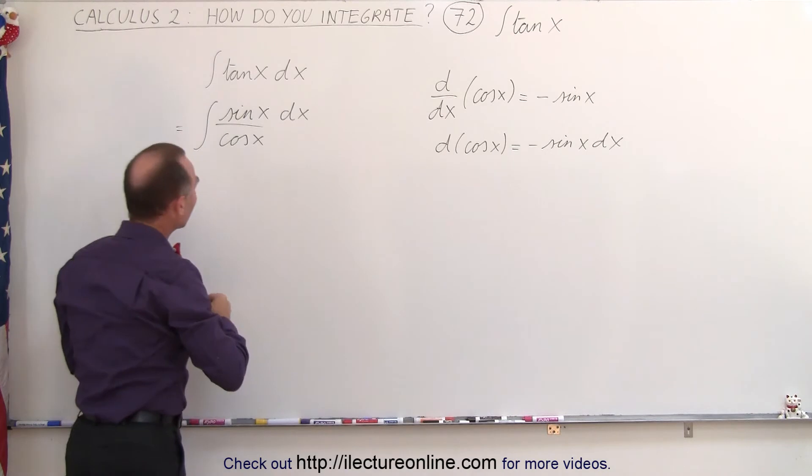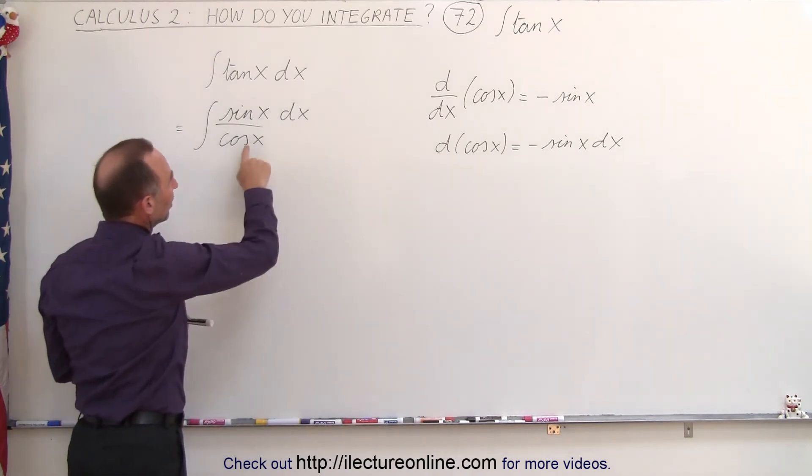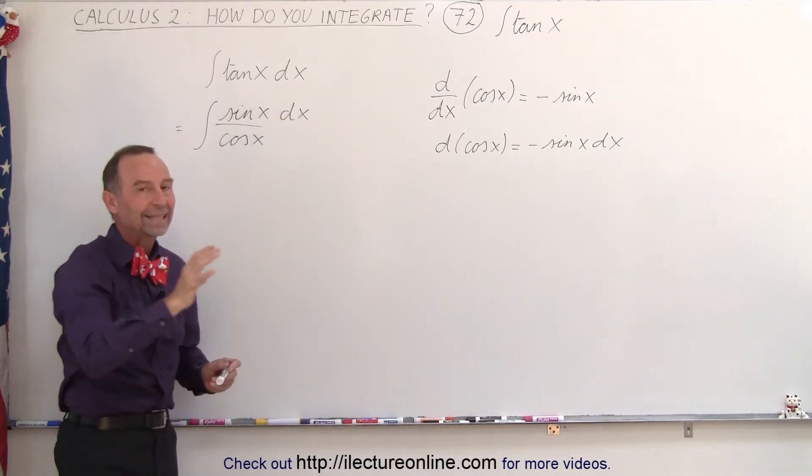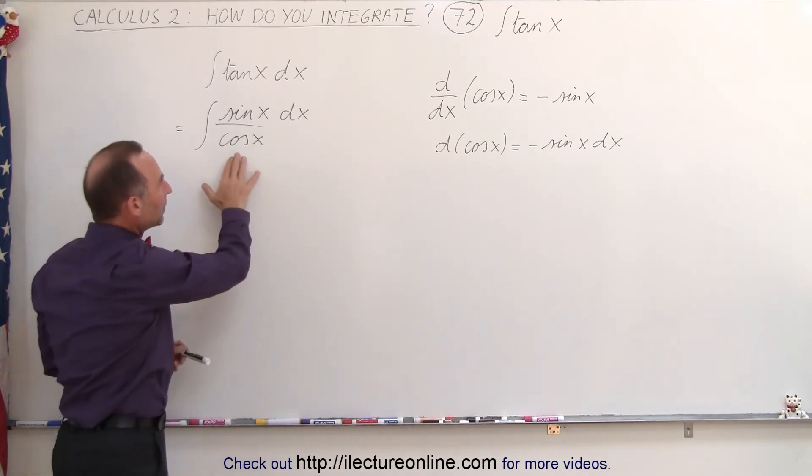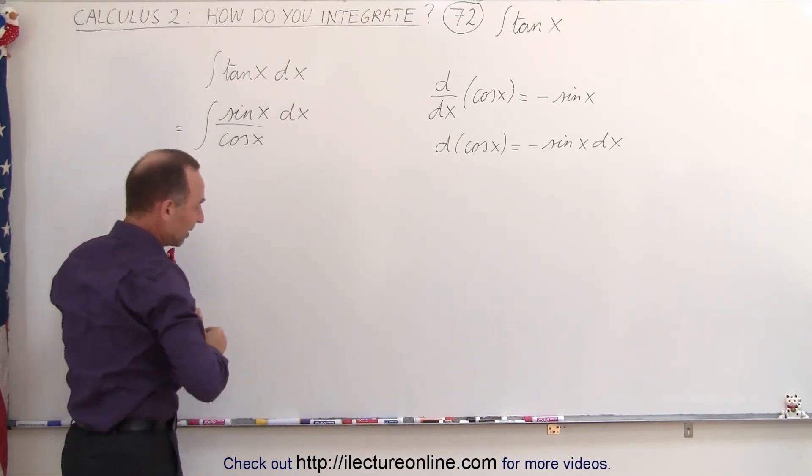So when we look at the denominator, we see the cosine of x, and in the numerator, we see almost the identical differential of the denominator. The only thing that's missing is the negative sign.